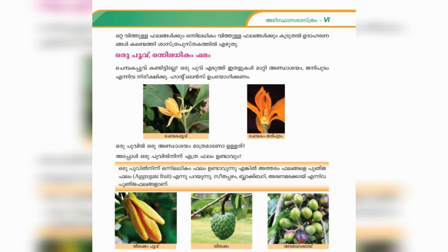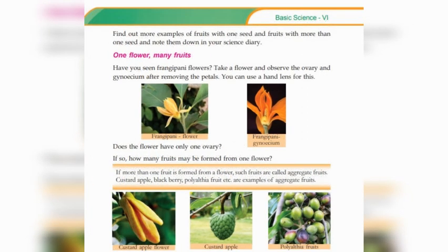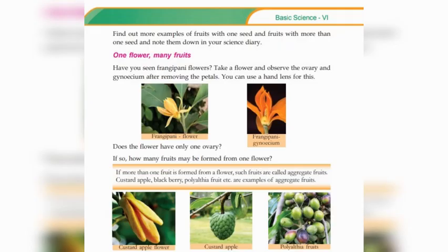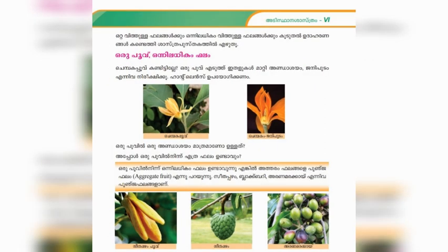One flower producing more than one fruit is called aggregate fruit. Examples of aggregate fruits include custard apple, blackberry, polyalthea, and similar fruits. These are all examples of aggregate fruits.